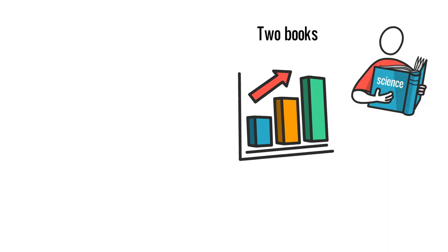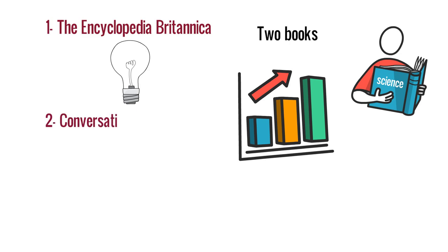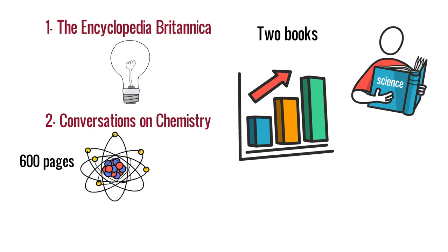First, the Encyclopedia Britannica. From this book, he got electrical knowledge. Second, Conversations on Chemistry. There were 600 pages in this book. This was basically based on chemistry for ordinary people, which was written by Jane Marcet.